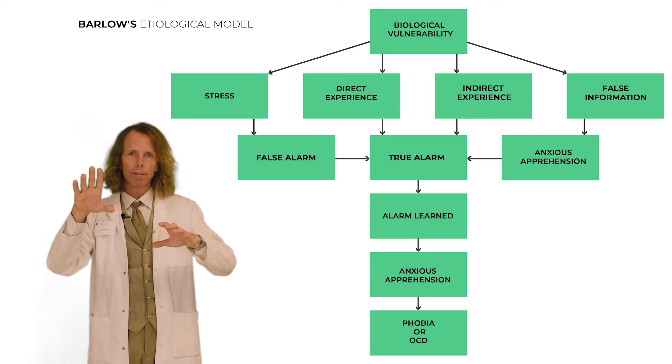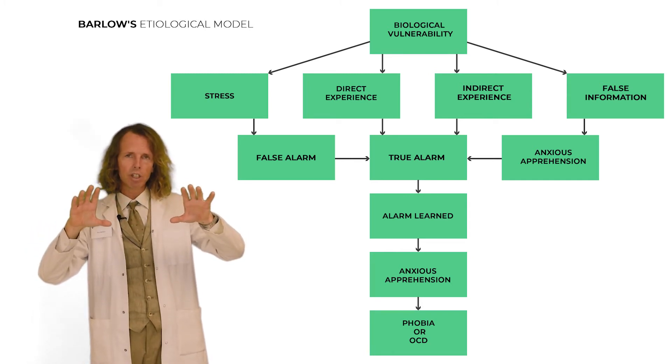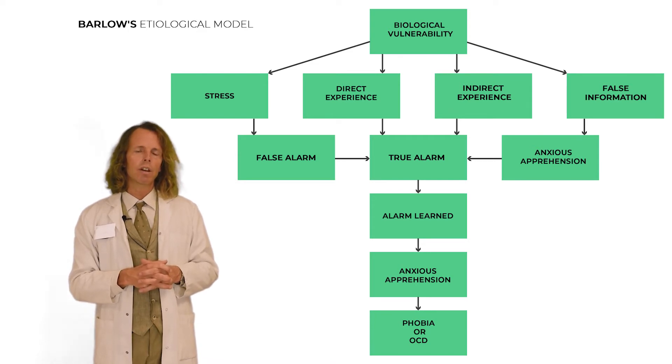When you look at the model, you see that there is a possible biological vulnerability. The biological vulnerability means that there could be a genetic predisposition to anxiety, which means that if their parents are anxious, their children could have the same kind of sensitivity, susceptibility, or predisposition regarding anxiety. It means that it is their legacy — they can inherit this predisposition.